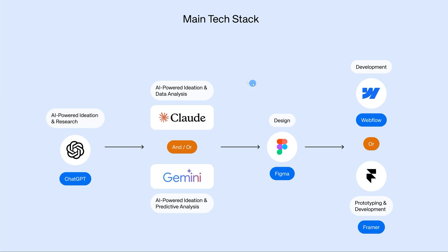This is my main tech stack. The first thing I use is ChatGPT — after reading the brief and understanding what the client wants, I use ChatGPT as an extension of my brain to do some research. And then I use Claude and Gemini for more ideation and analysis.